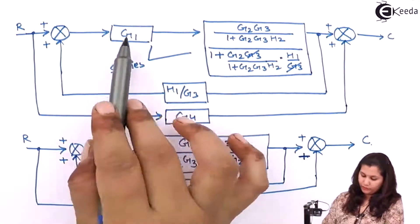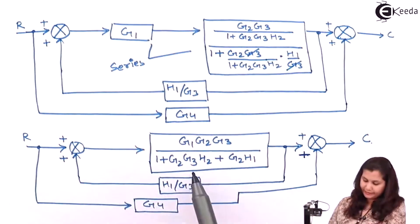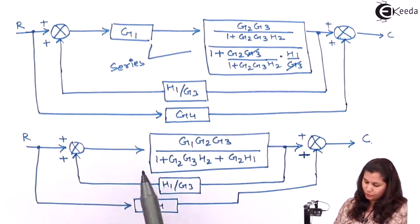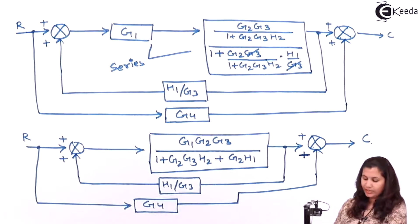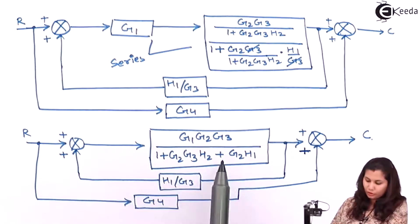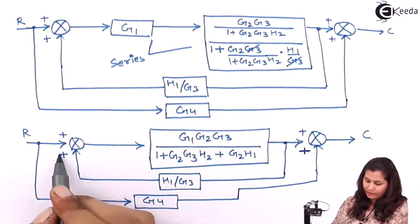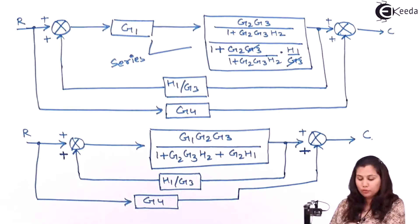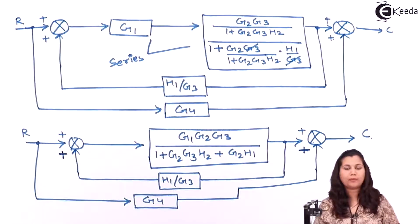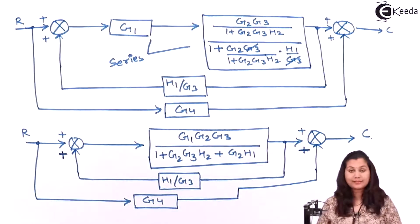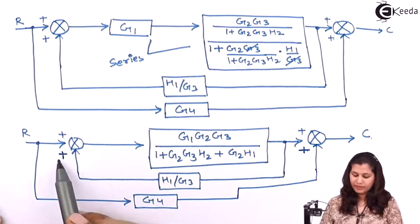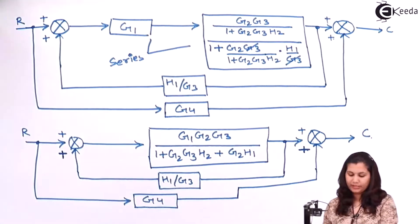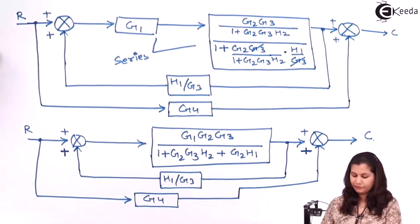We have combined these two blocks by multiplying their transfer functions. Then we can see that these two systems are forming a positive feedback loop — here we have a positive sign. So its transfer function will be Gs divided by 1 minus Gs·Hs, because with a plus sign in the loop, we get a minus sign in the denominator. Let's eliminate this positive feedback loop.